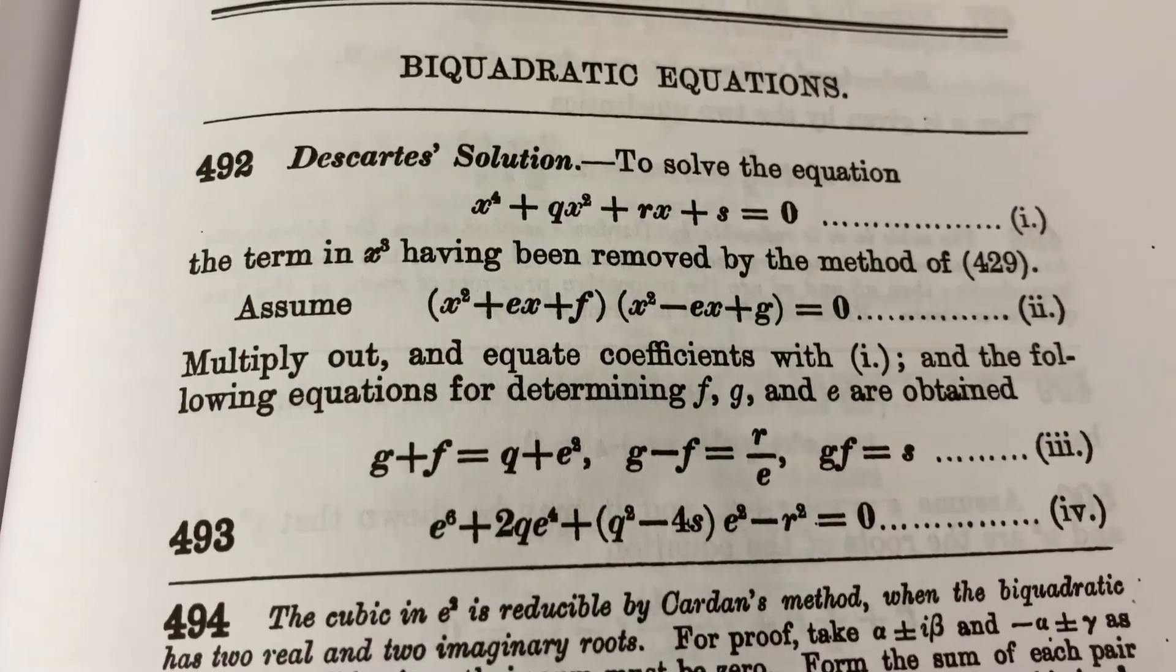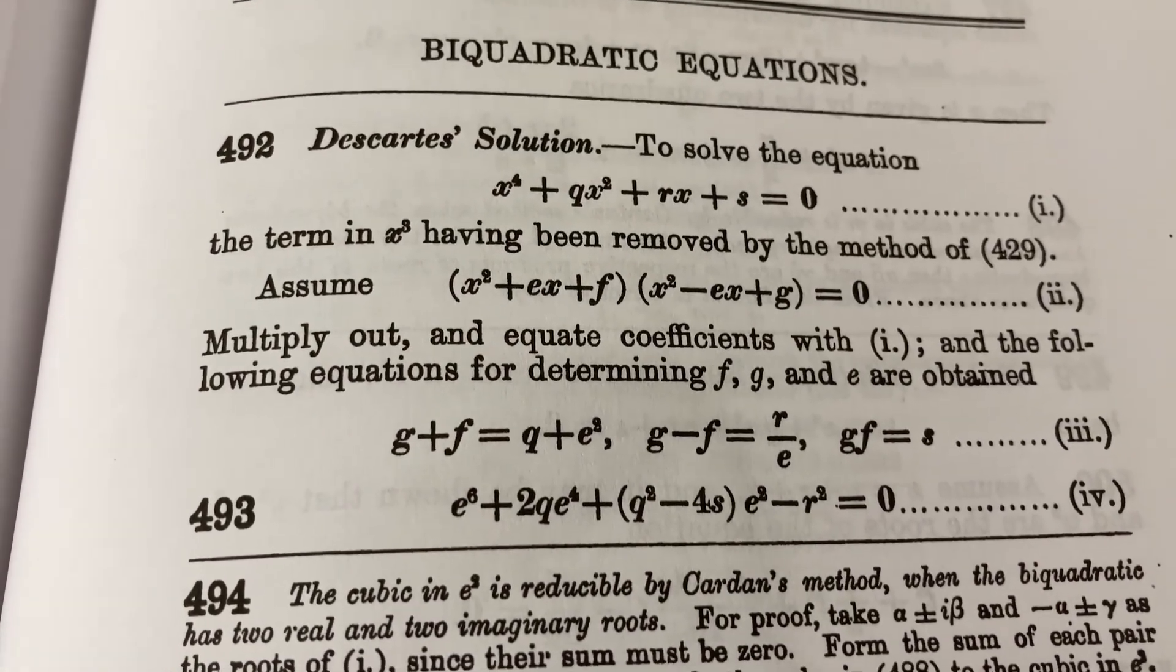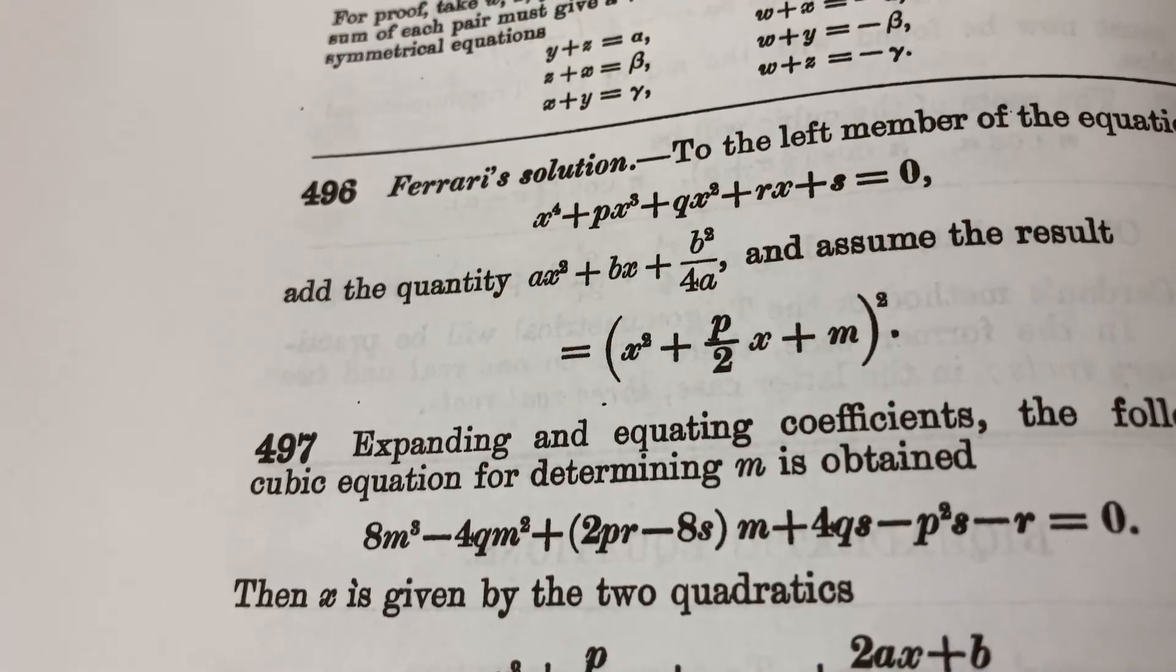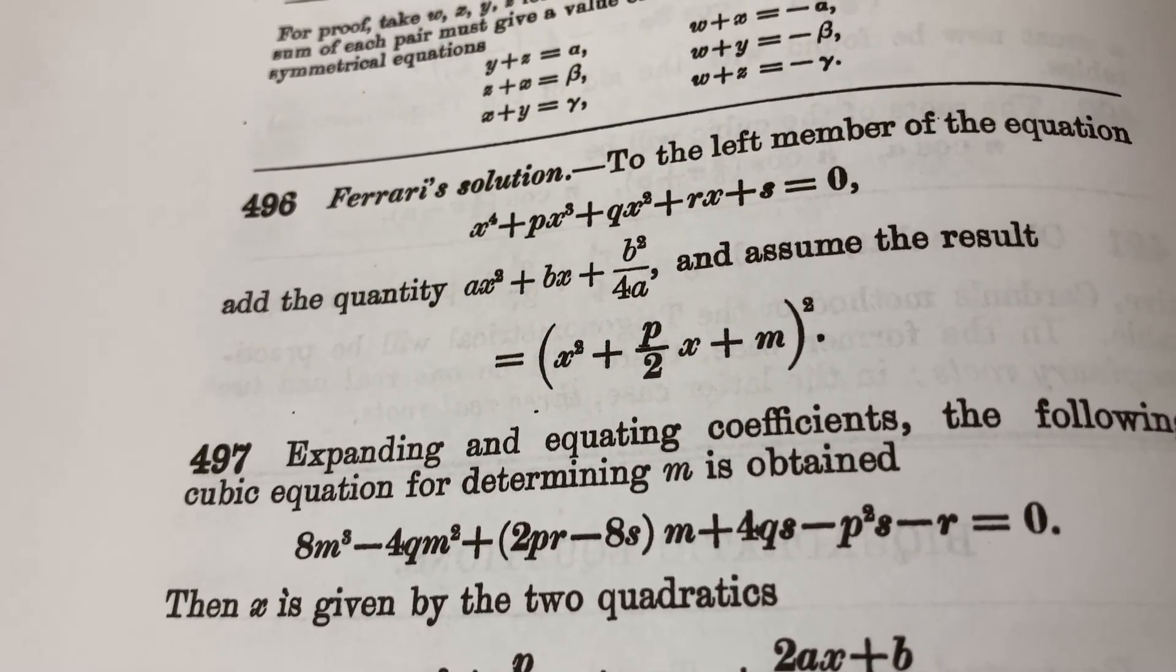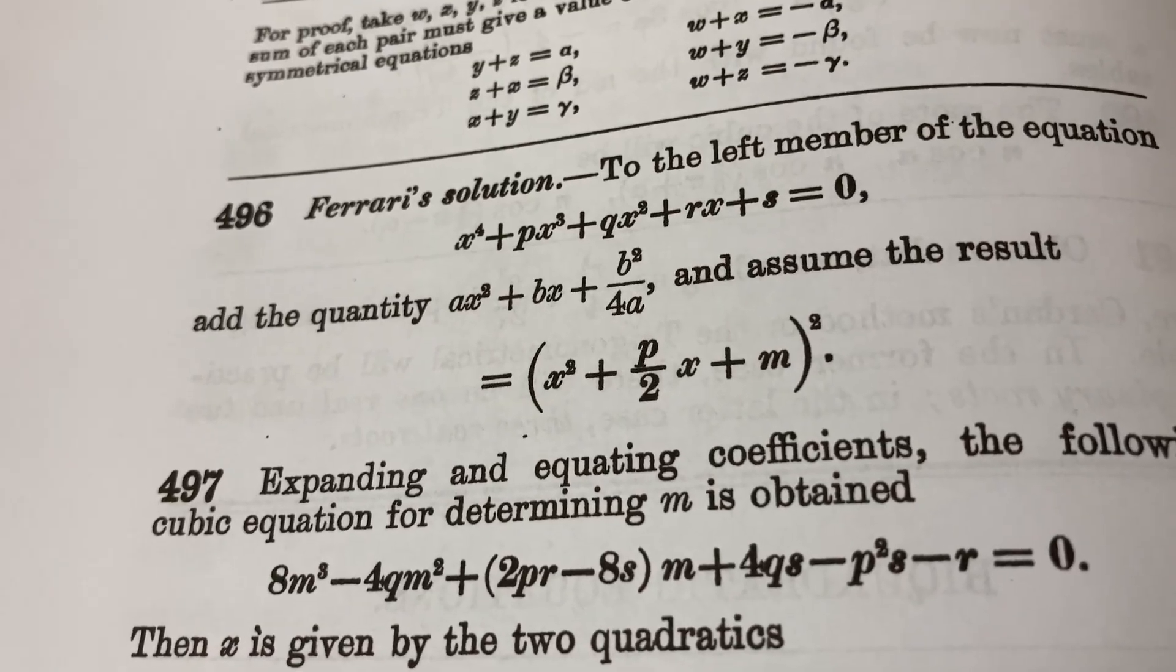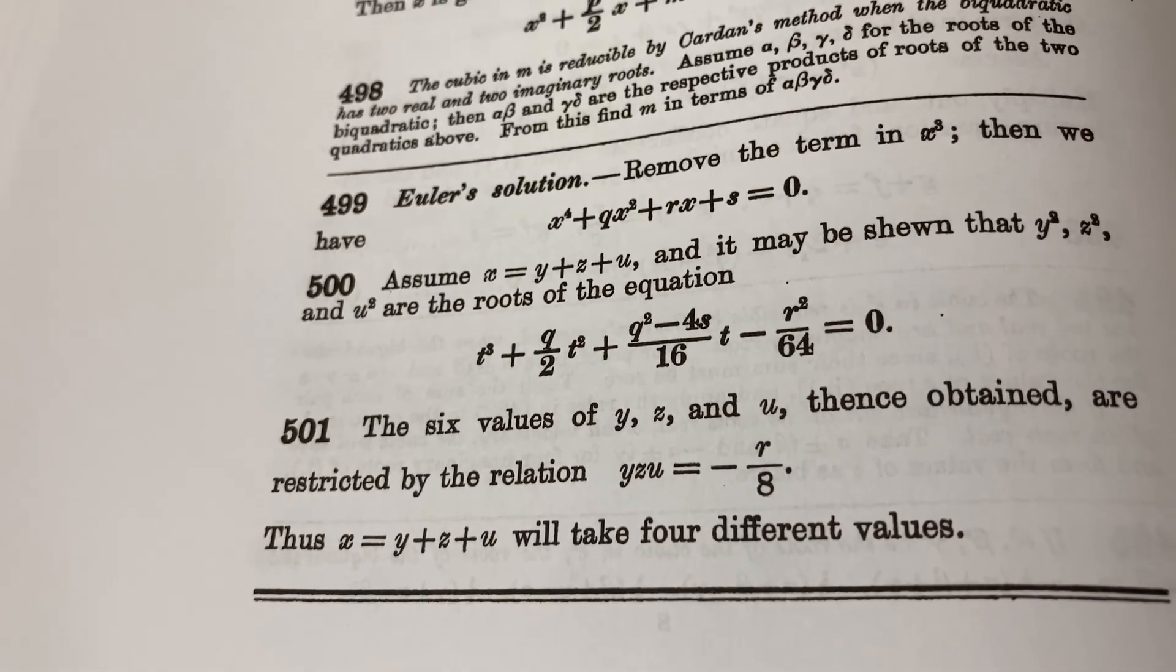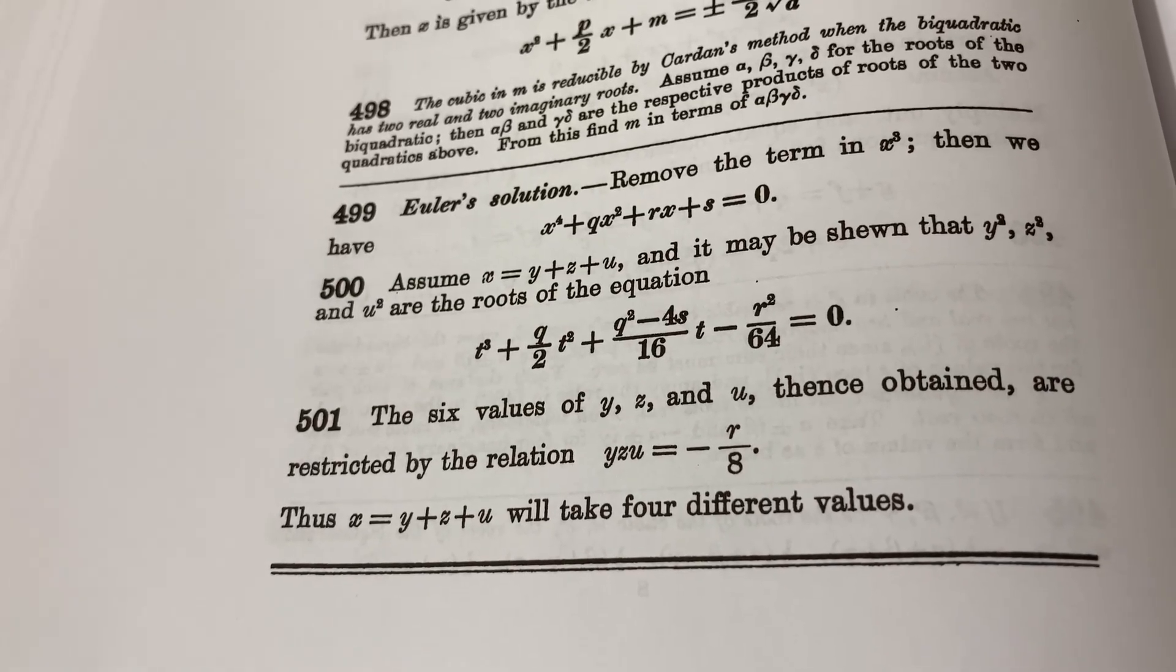This section is on bi-quadratic equations. And there's a couple different ways to do this. You have Descartes' solution here. Then they discuss Ferrari's solution here. And I love the name Ferrari. Always makes me think of the car. And then Euler's solution. So this book really is just a book filled with techniques and theorems.